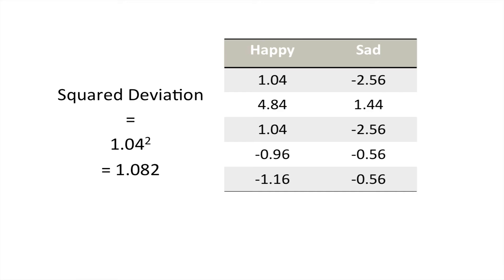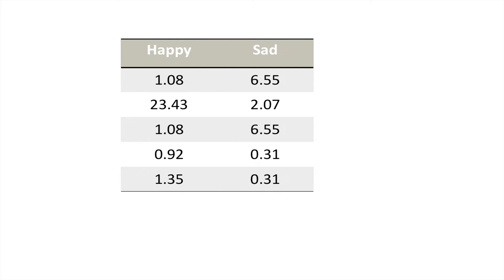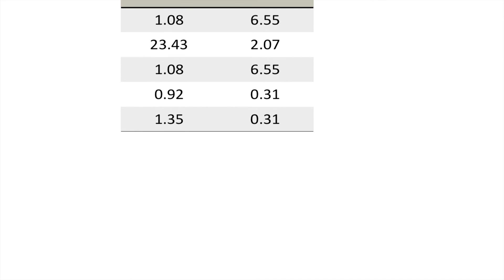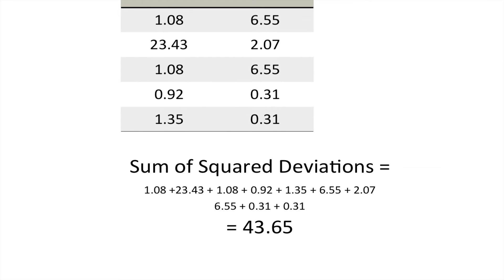In the case of the first value, that's 1.082. And now we're going to add up all those values to work out the total amount of variability in these deviations.